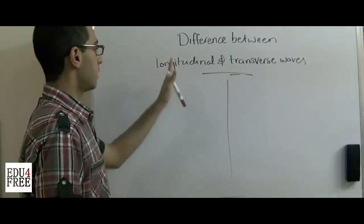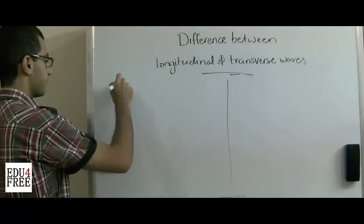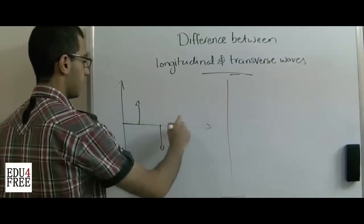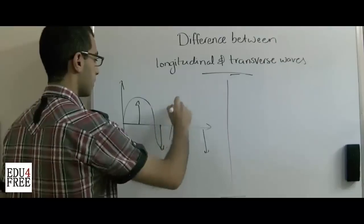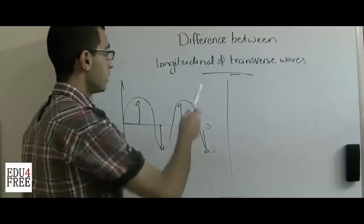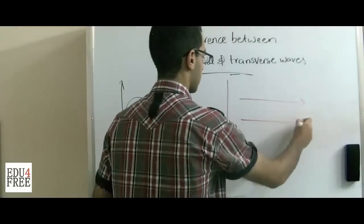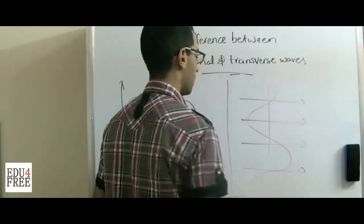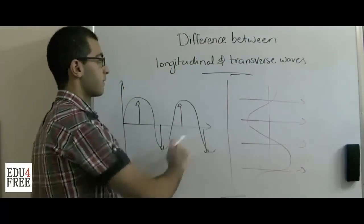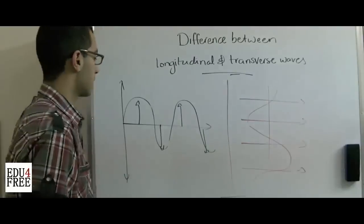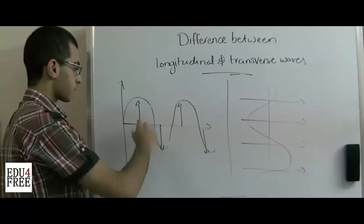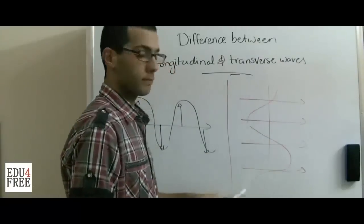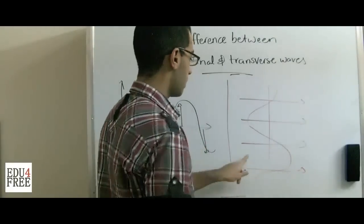The difference between the longitudinal and the transverse waves. First, in the transverse waves, the vibrating body moves up and down. While in the longitudinal waves, the body moves to the right and the left of the equilibrium position. In the transverse wave, the direction of vibration is perpendicular to the propagation direction, while in the longitudinal wave, the direction of vibration is along the direction of propagation.